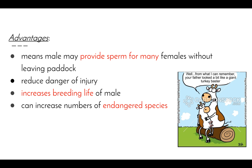Some advantages of artificial insemination: the male may provide sperm for many females without leaving the paddock, so one male on a farm can reproduce with a multitude of females without going through sexual reproduction each time. It reduces the danger of injury — particularly to the female — since males are generally stronger and more dominant. It increases the breeding life of the male, and can increase the numbers of endangered species by allowing one male to inseminate multiple females, producing a larger number of offspring.